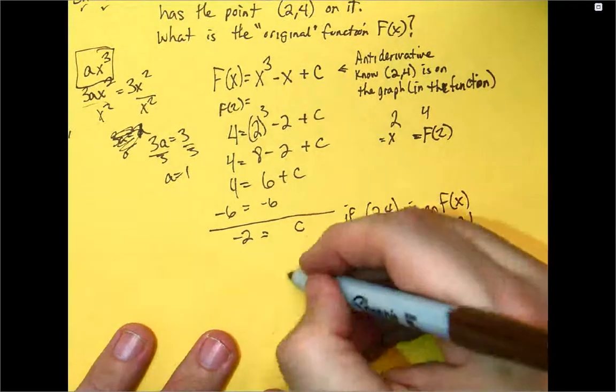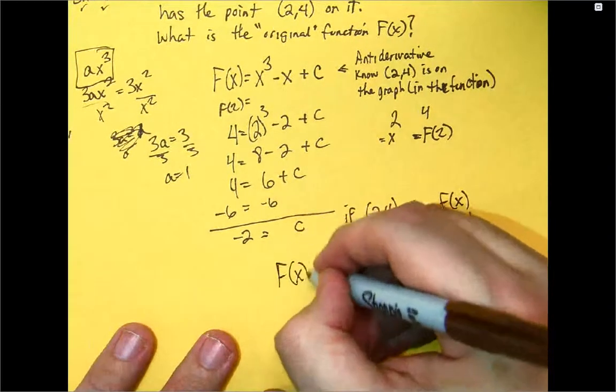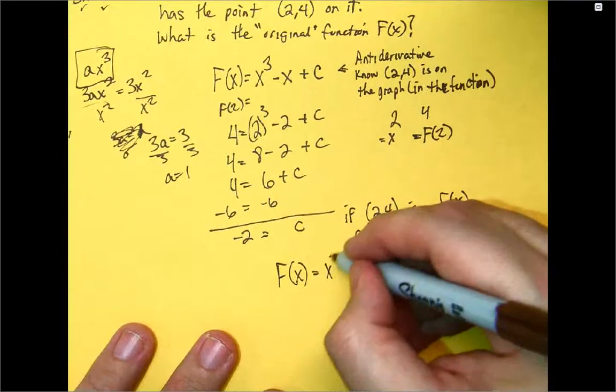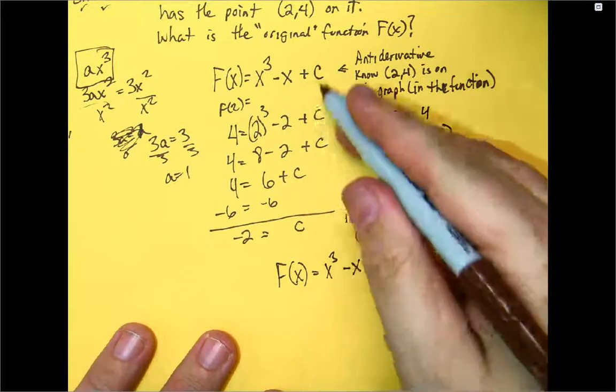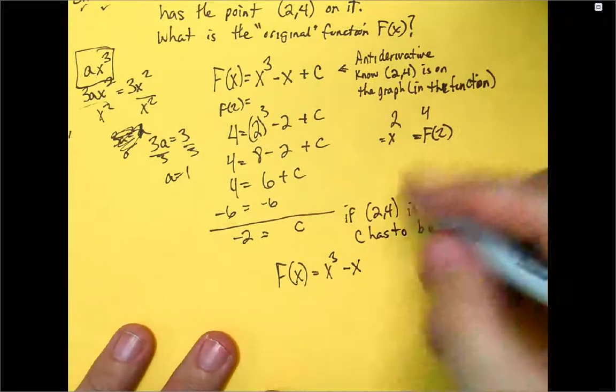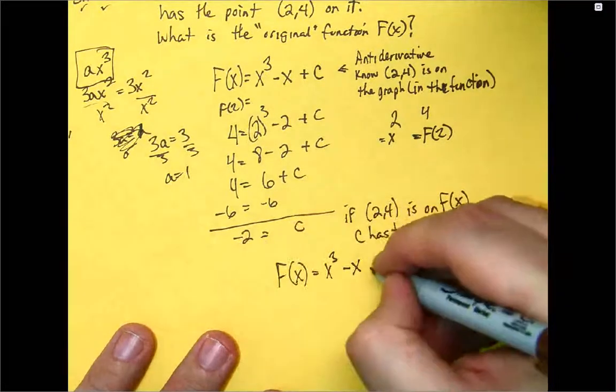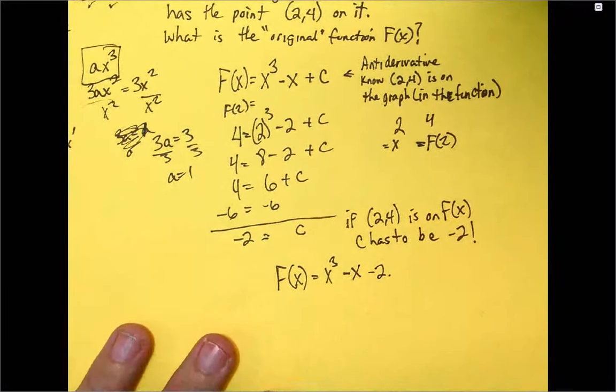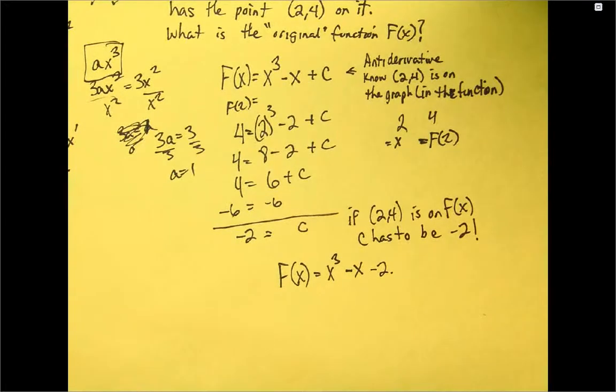So I could go back to big F of x. Say I know that's going to be x cubed minus x. Now, instead of a constant, which gives me an infinite number of them, I'm just going to say I know my c is a negative 2.